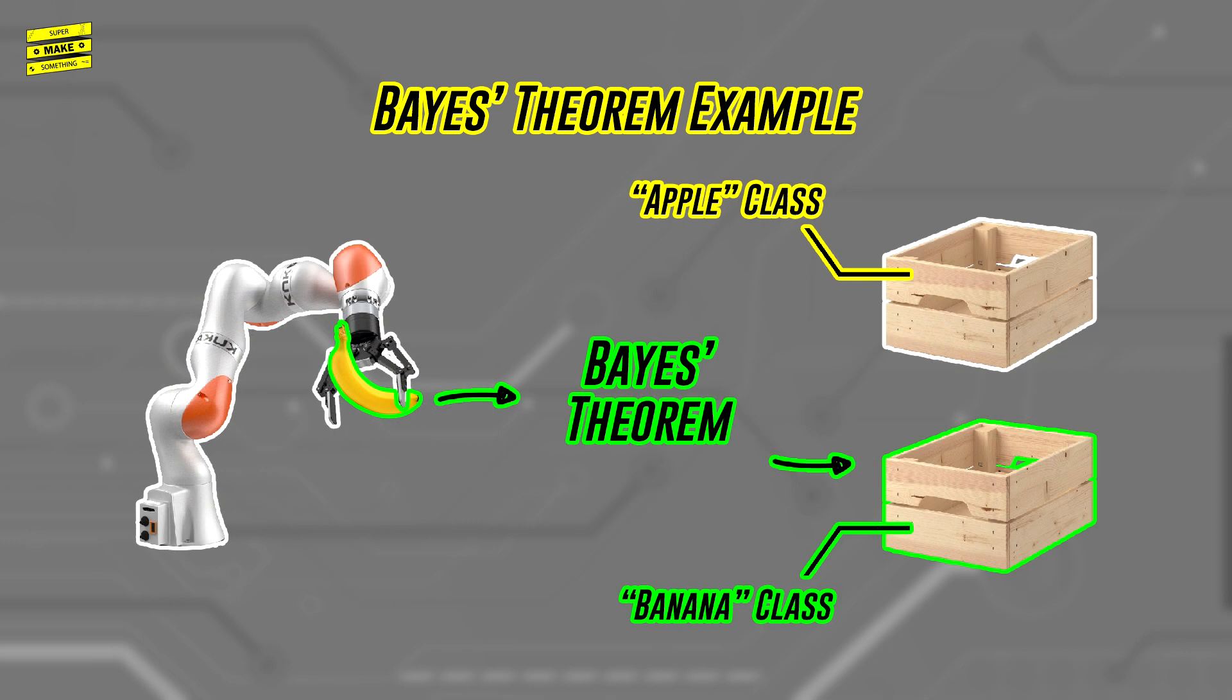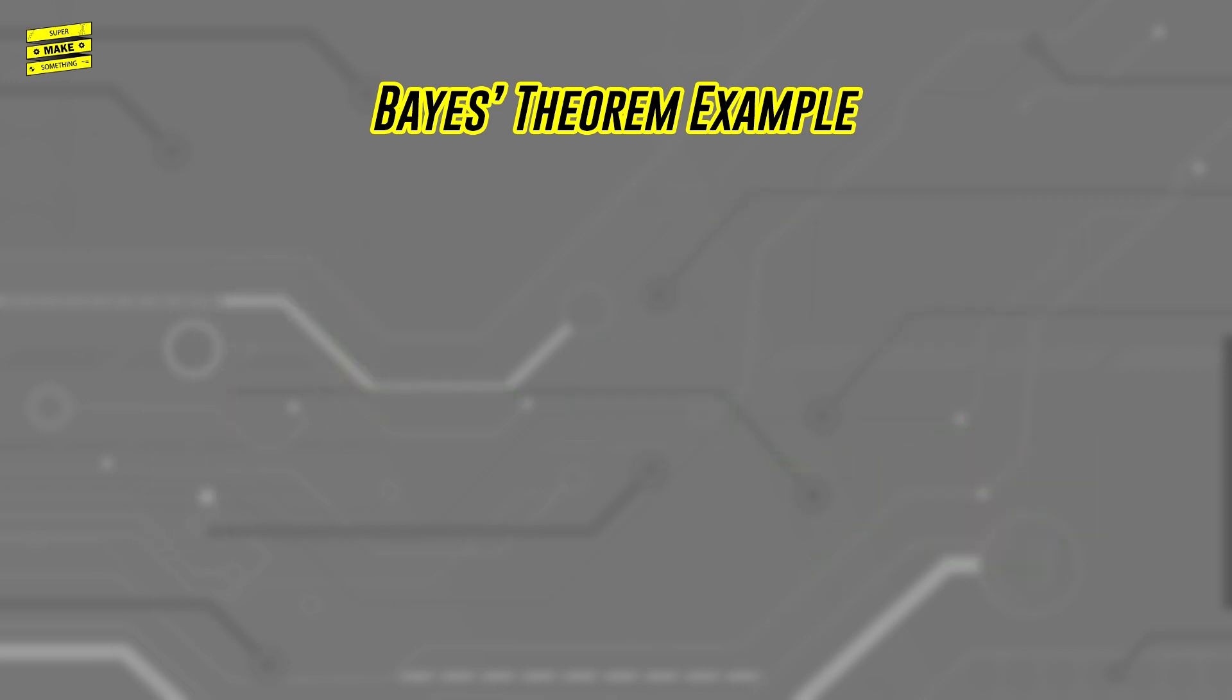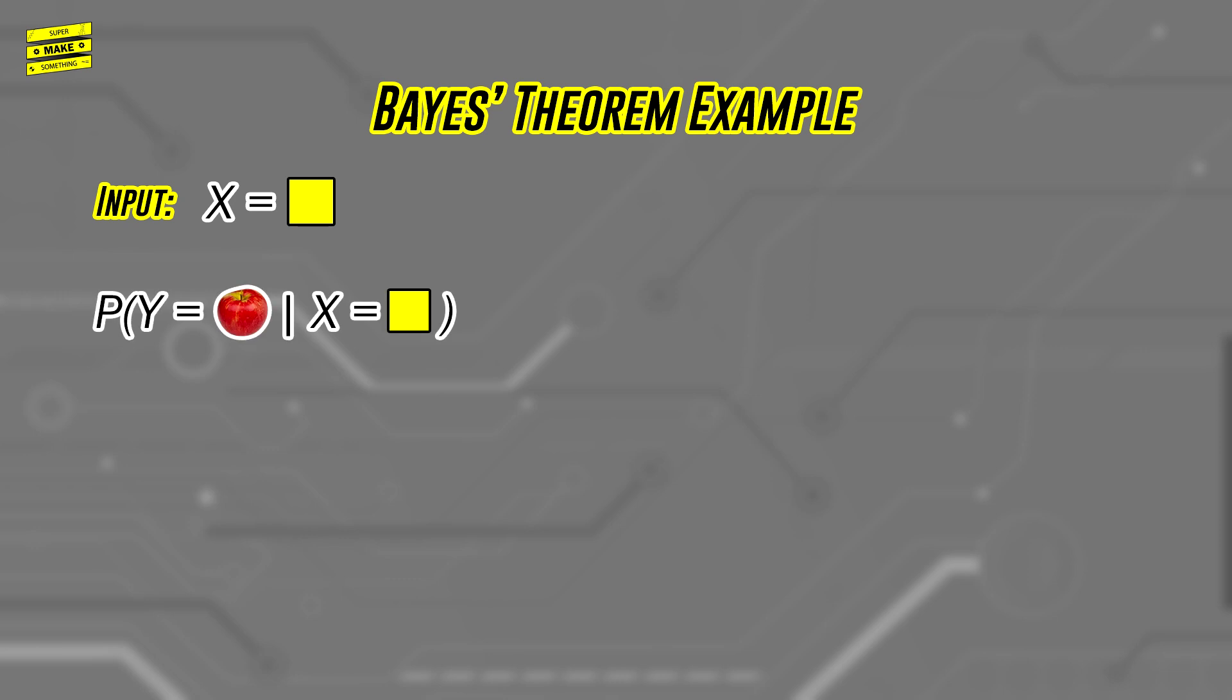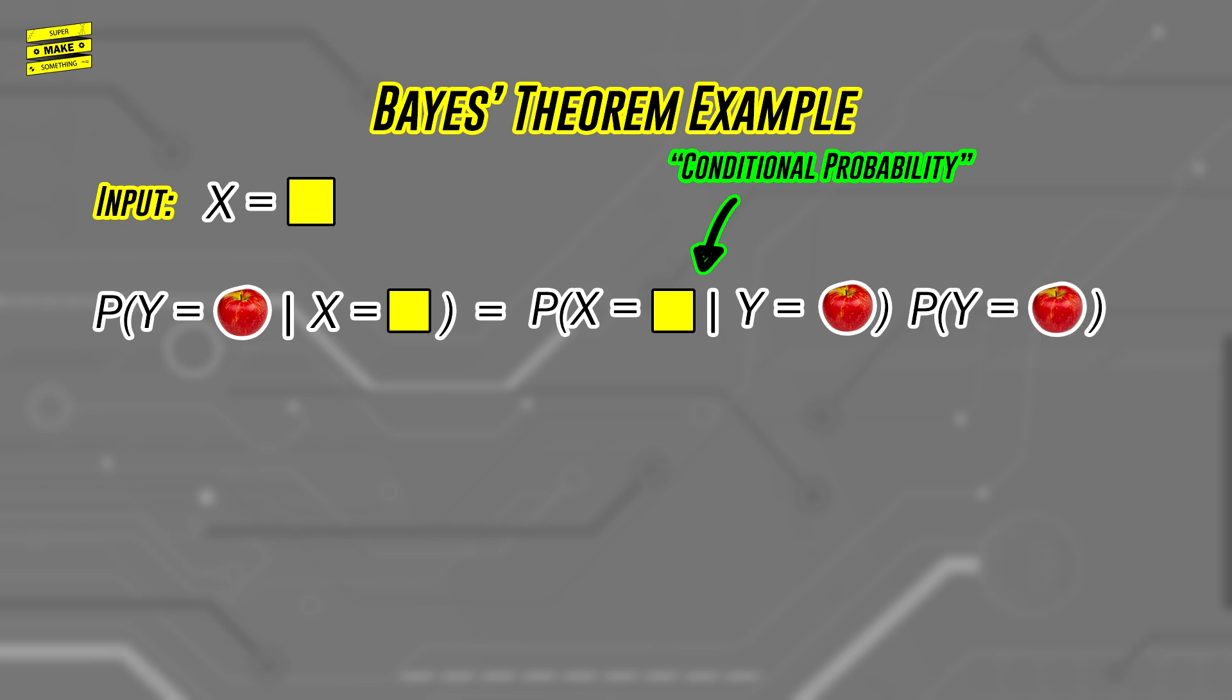Using this information, it's possible to calculate the probability that the robot is seeing an apple or a banana based on a fruit's color using Bayes' rule as follows. Using its camera, the robot sees that the color of the fruit it is trying to classify as yellow. The probability that the fruit is an apple given that its color is yellow is equal to the probability that the color of fruit is yellow given that it is an apple, also known as the conditional probability, times the probability of randomly picking an apple out of the warehouse, also known as the prior probability.